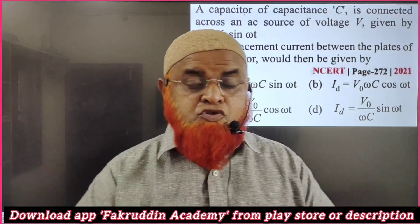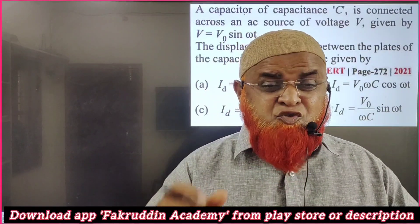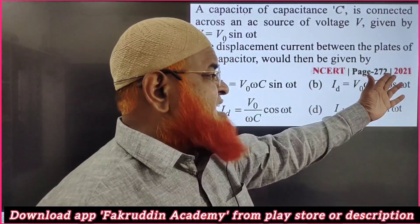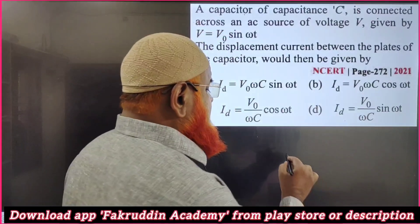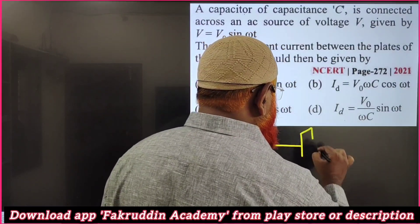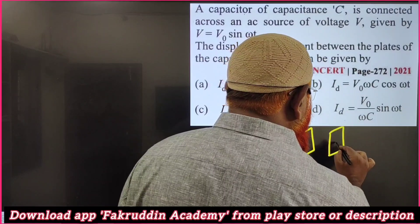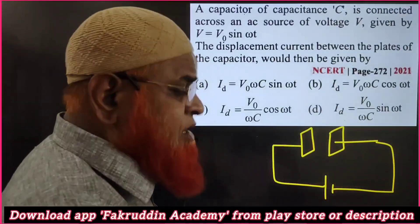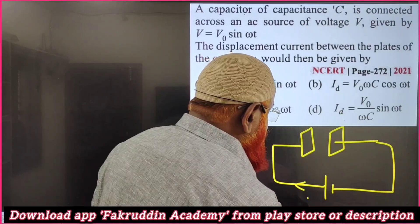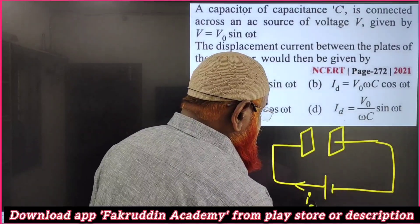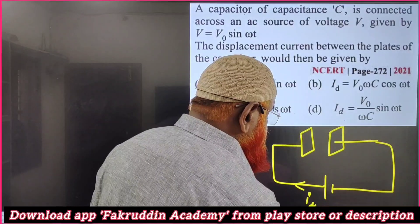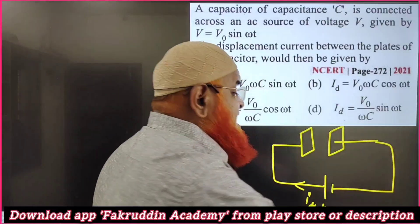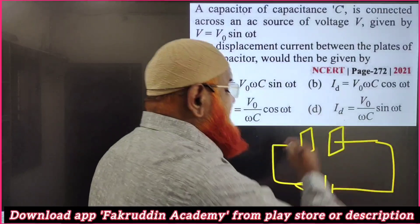Welcome to the two-minute series of shortcut explanations. Here we shall discuss electromagnetic waves, a special ask in 2021. There is a capacitor and its two plates are connected to a battery. The current passing through the wire is said to be drift current, and this current flows in the wire in a cycling process.